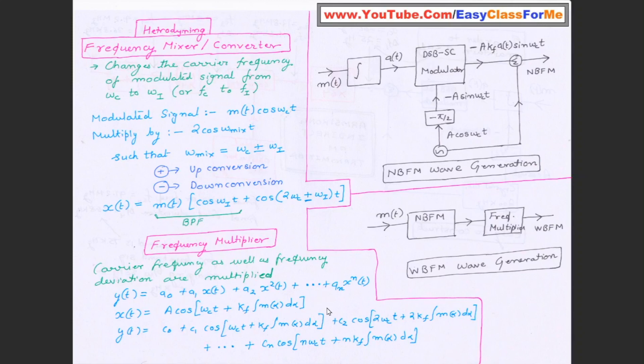if xt is equal to a cos ωct plus kf integration α dα, then on simplifying this we have already seen that your signal will be cos of ωct kf integration mt dα. This is the original signal and then you will also receive the signal at twice of ωct and the frequency deviation as you can see here is also multiplied by 2. Similarly, you will also receive the signal at nth frequency n ωct and the frequency deviation as you see here is multiplied by n also.